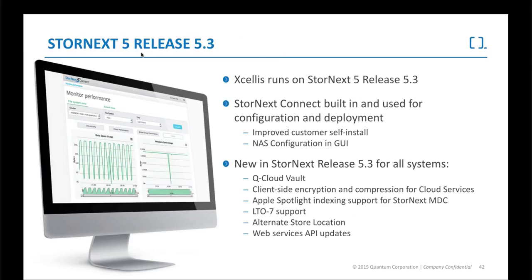With the release of Stornex 5.3, we now have Excellus — the thing I'm most excited to talk about today. Running on version 5.3, it gives us all the Connect configuration and deployment tools. It also allows us to use Q Cloud Vault — the cloud option to push files off-premise to the cloud. It gives us full LTO7 support. LTO7 has some great new features, biggest of all being capacity and speed — more capacity on tapes and getting data on and off them much quicker.